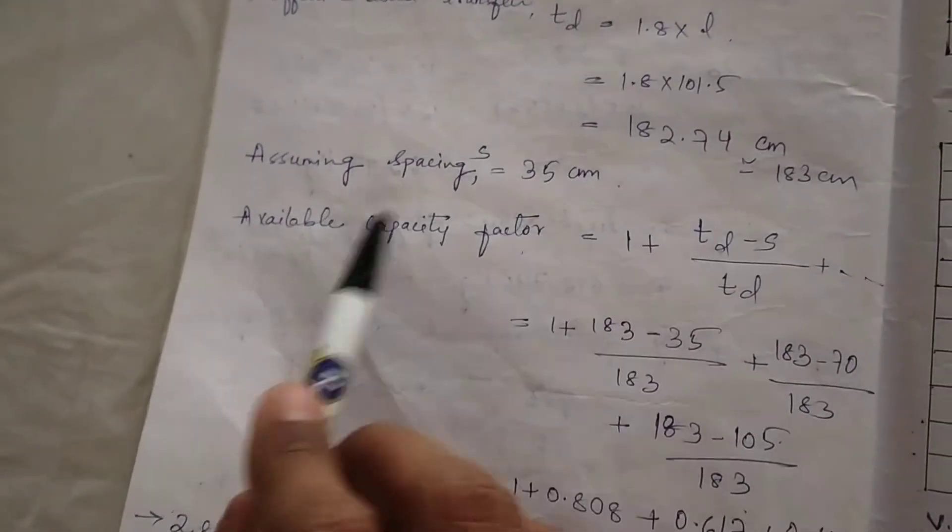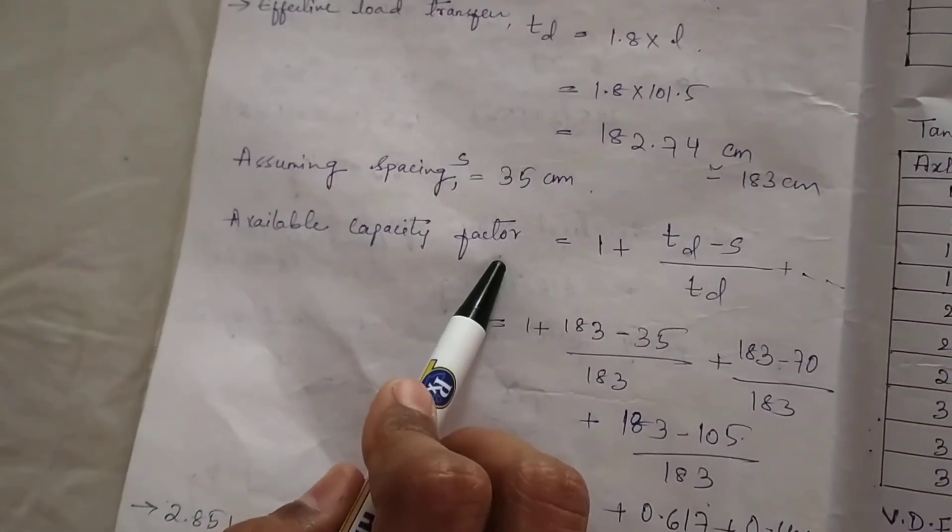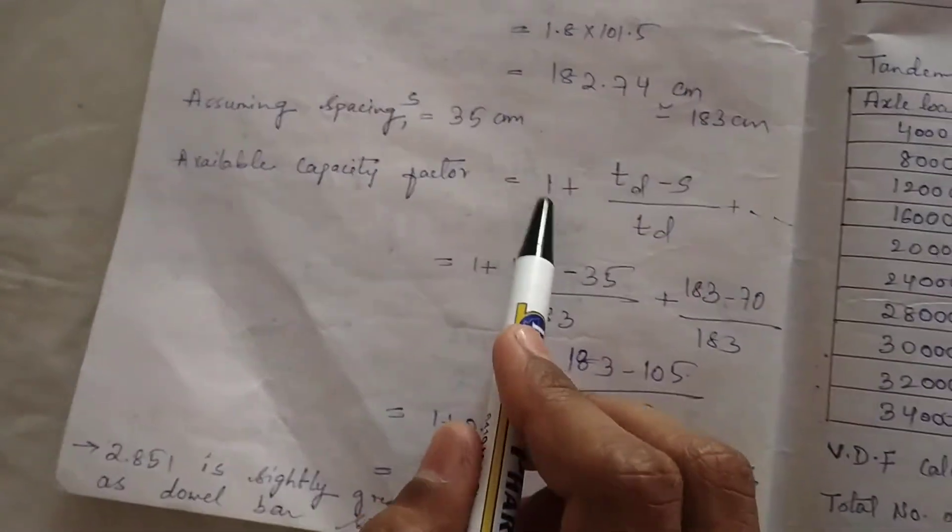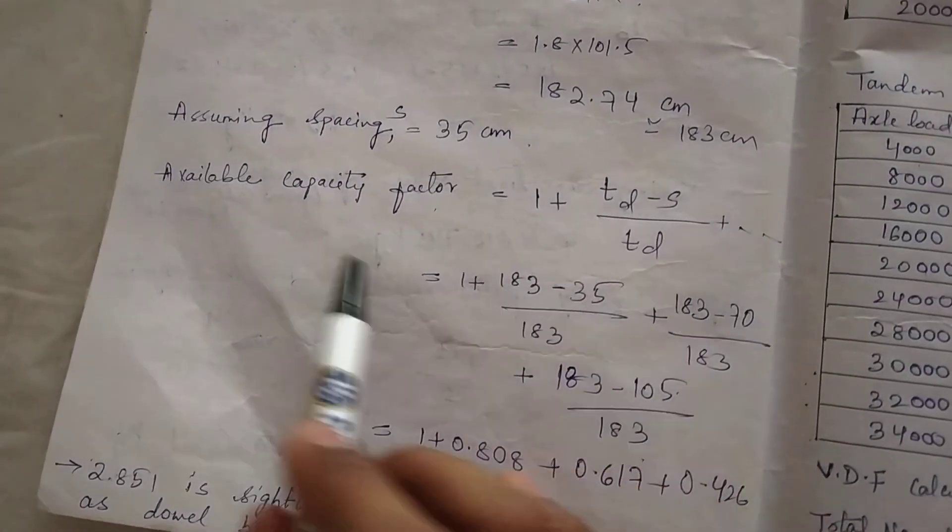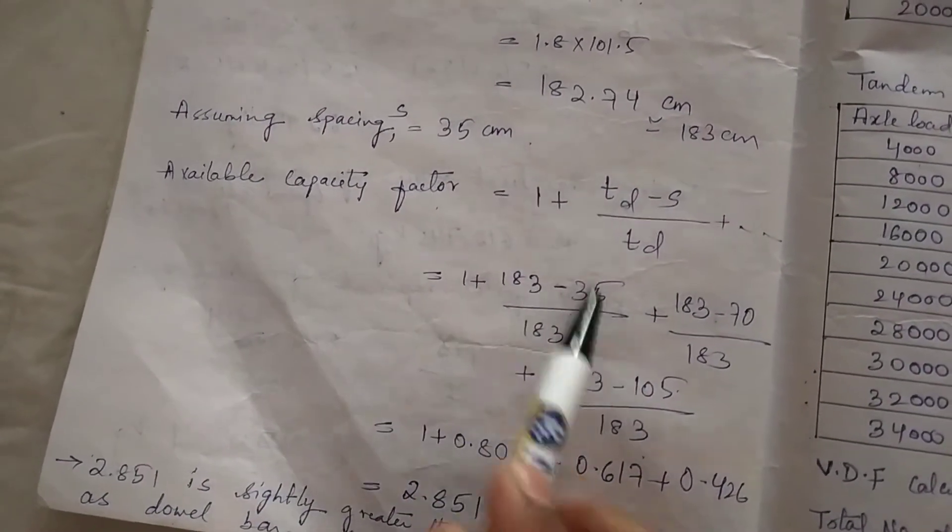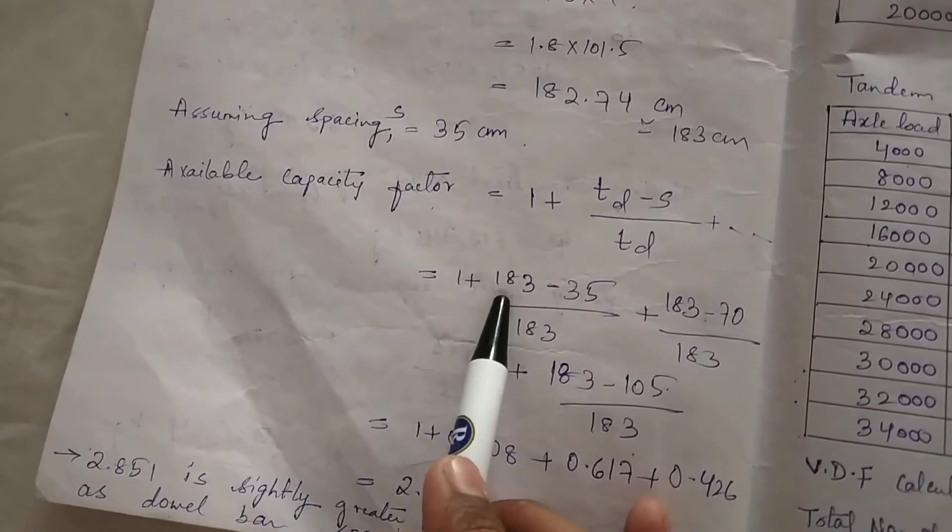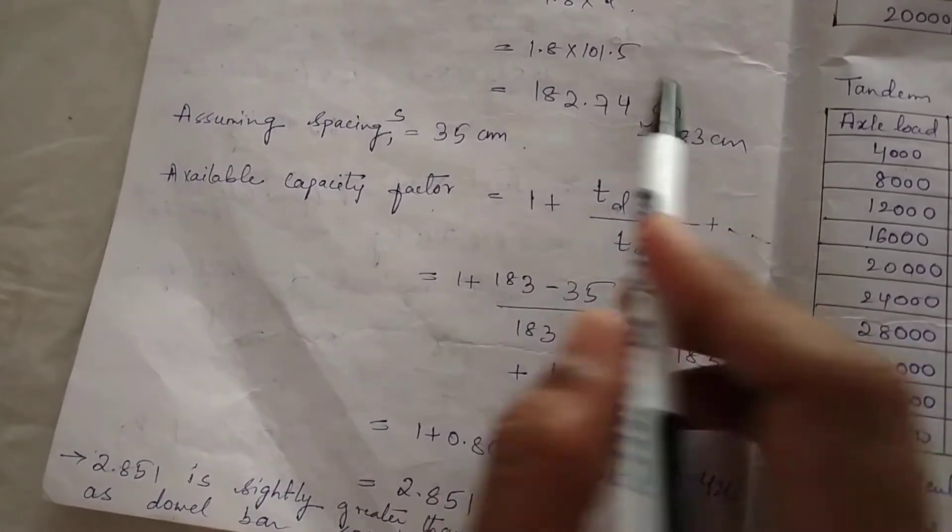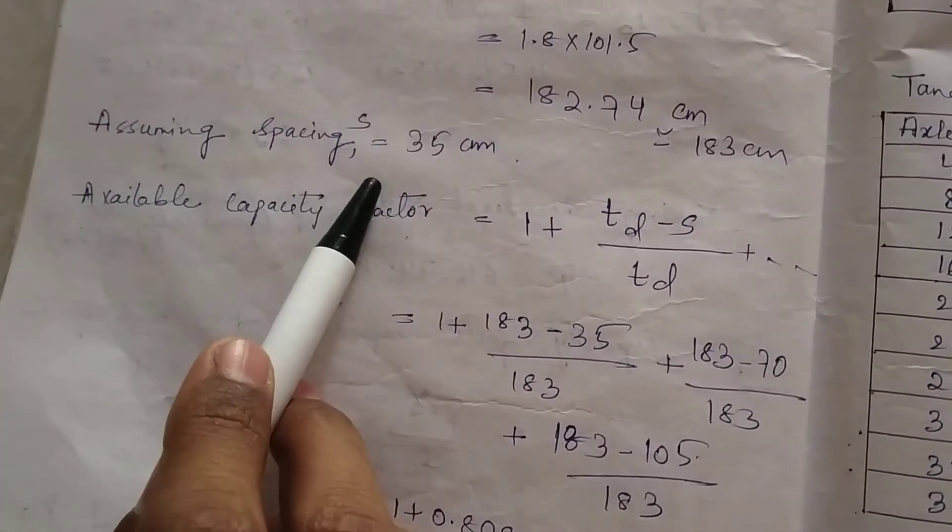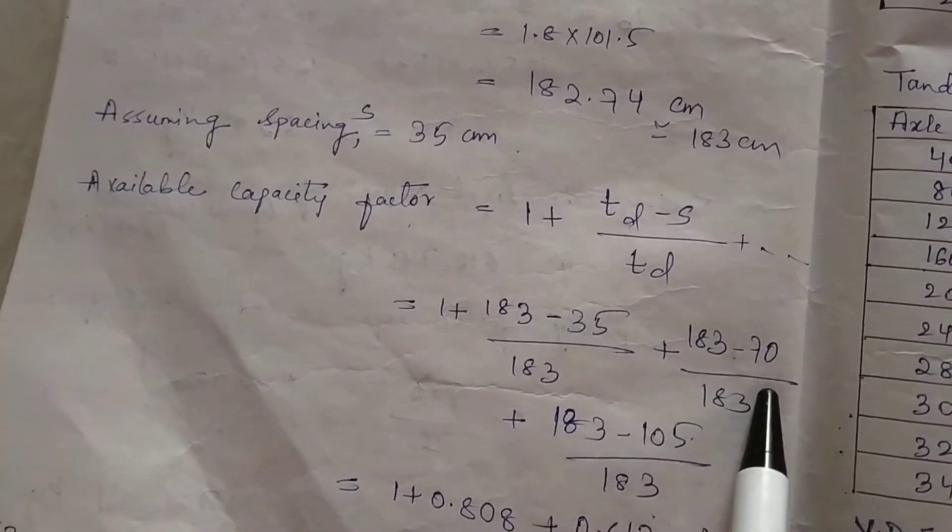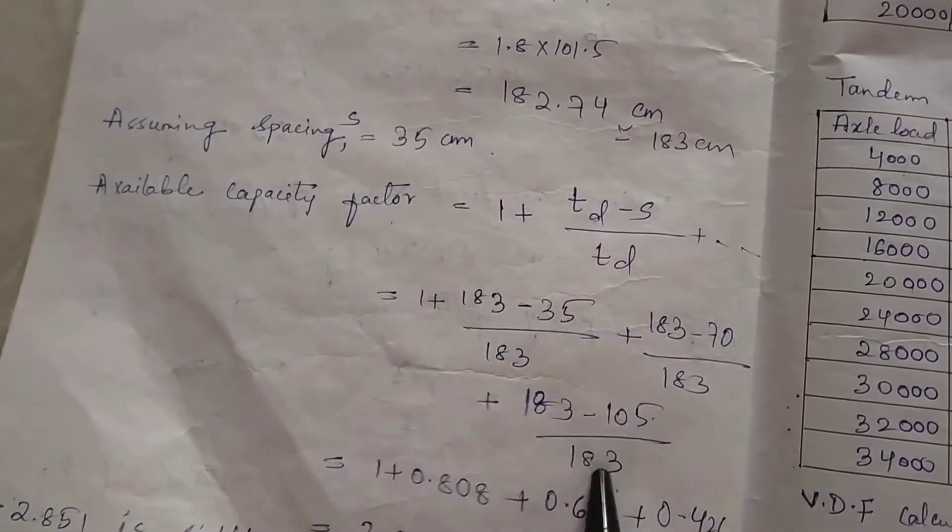Now we are assuming the spacing s as 35 centimeters. Now we have to calculate the available capacity factor. The formula for that is 1 + (td - s)/td. For calculating available capacity factor, we have to take three times the spacing.